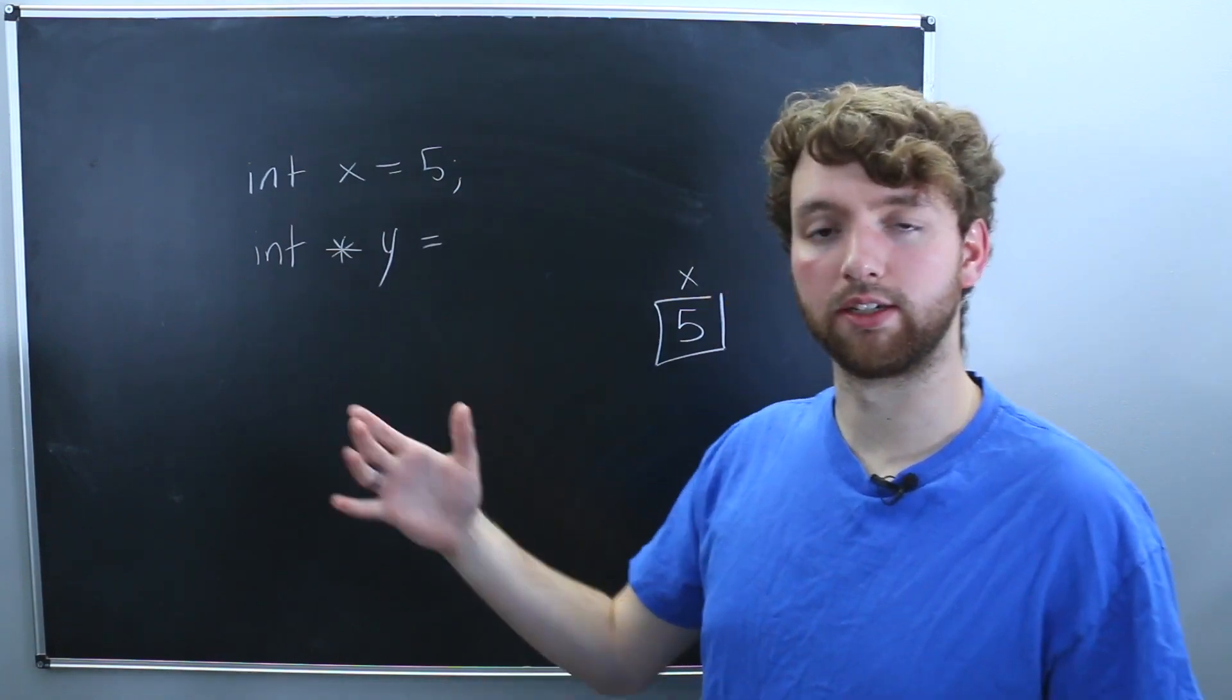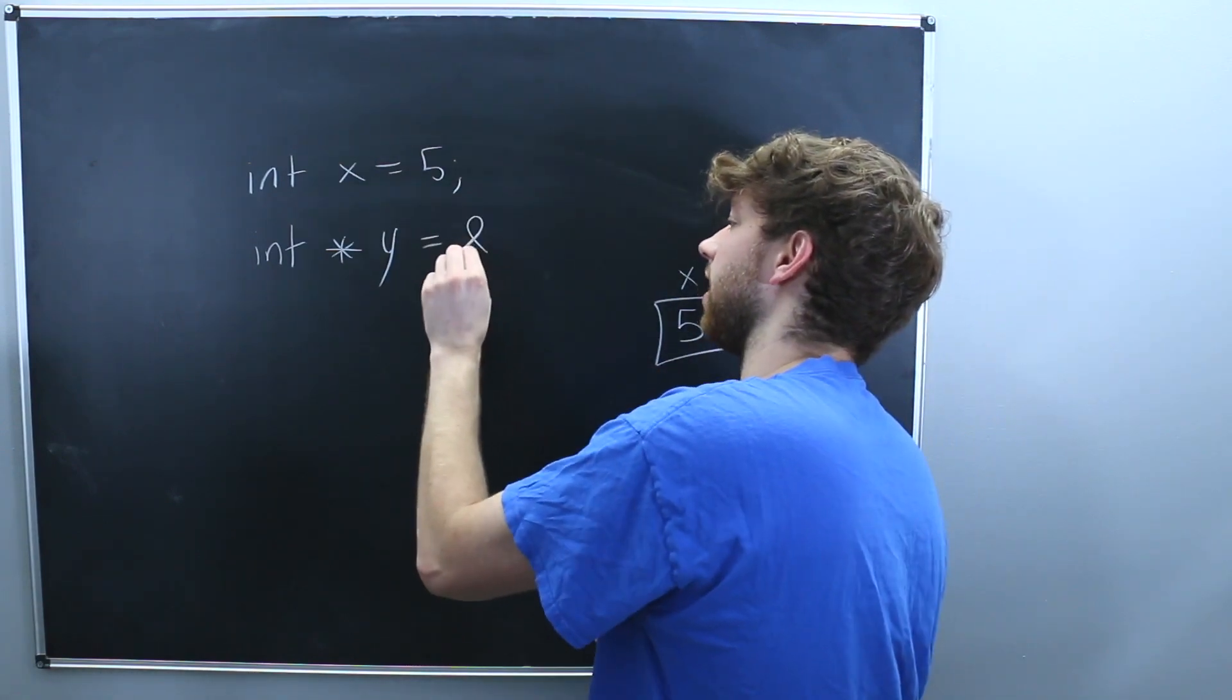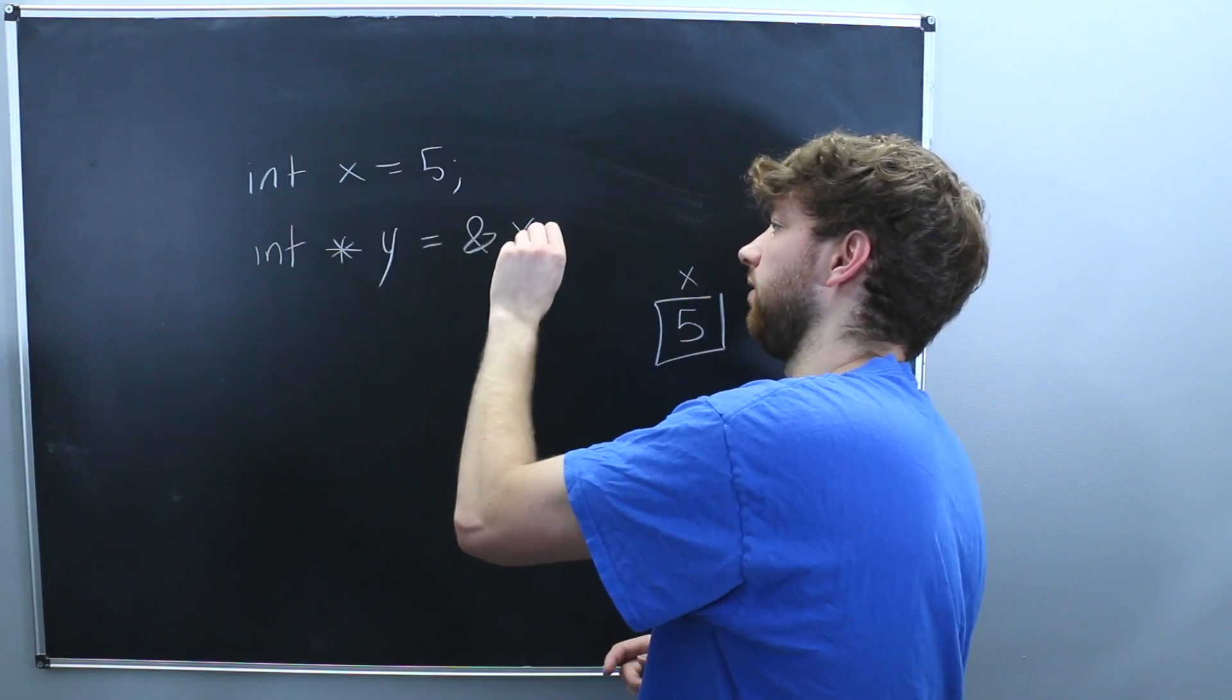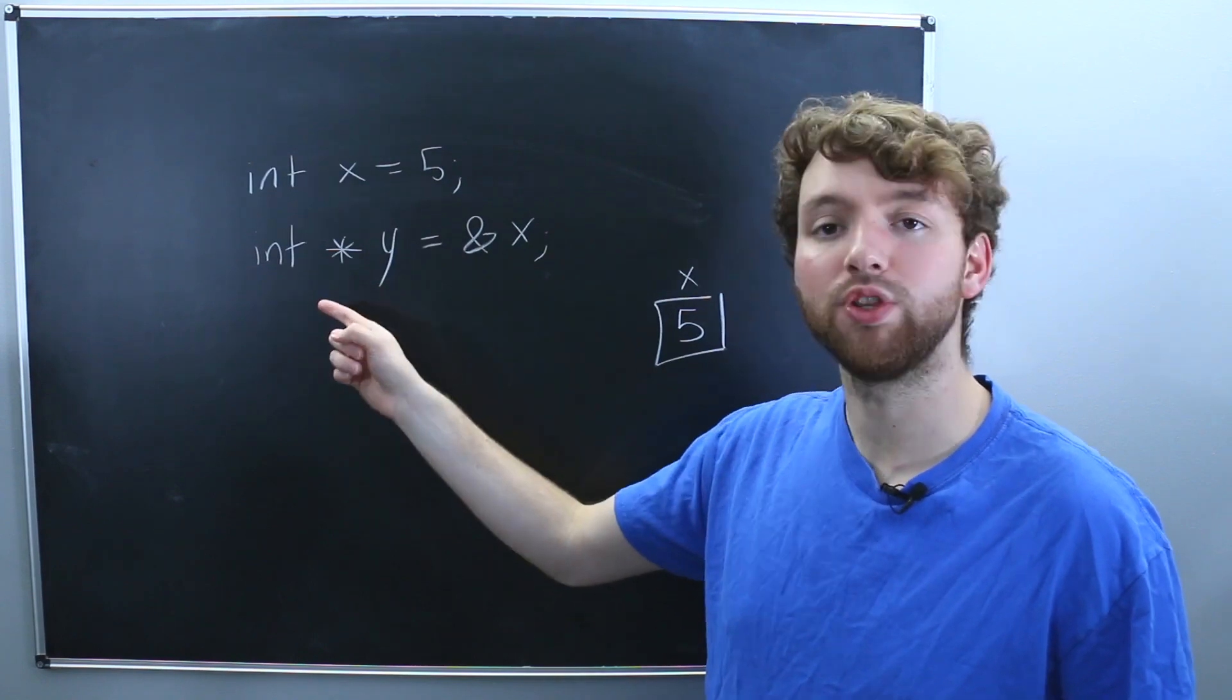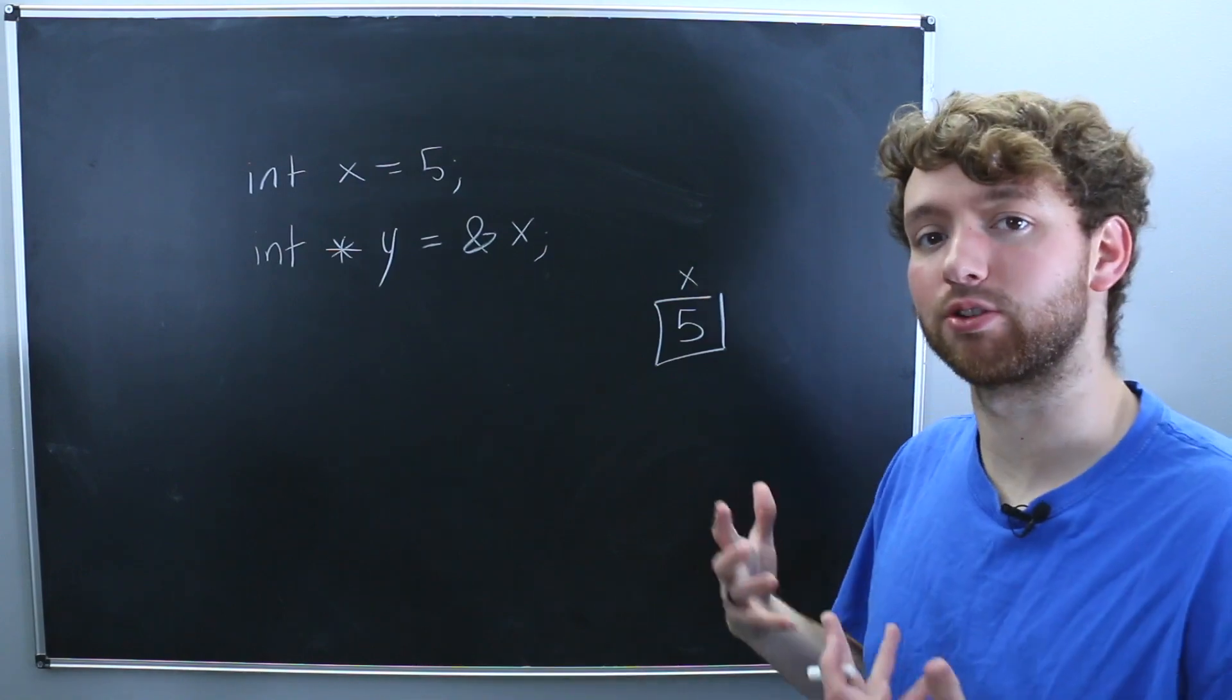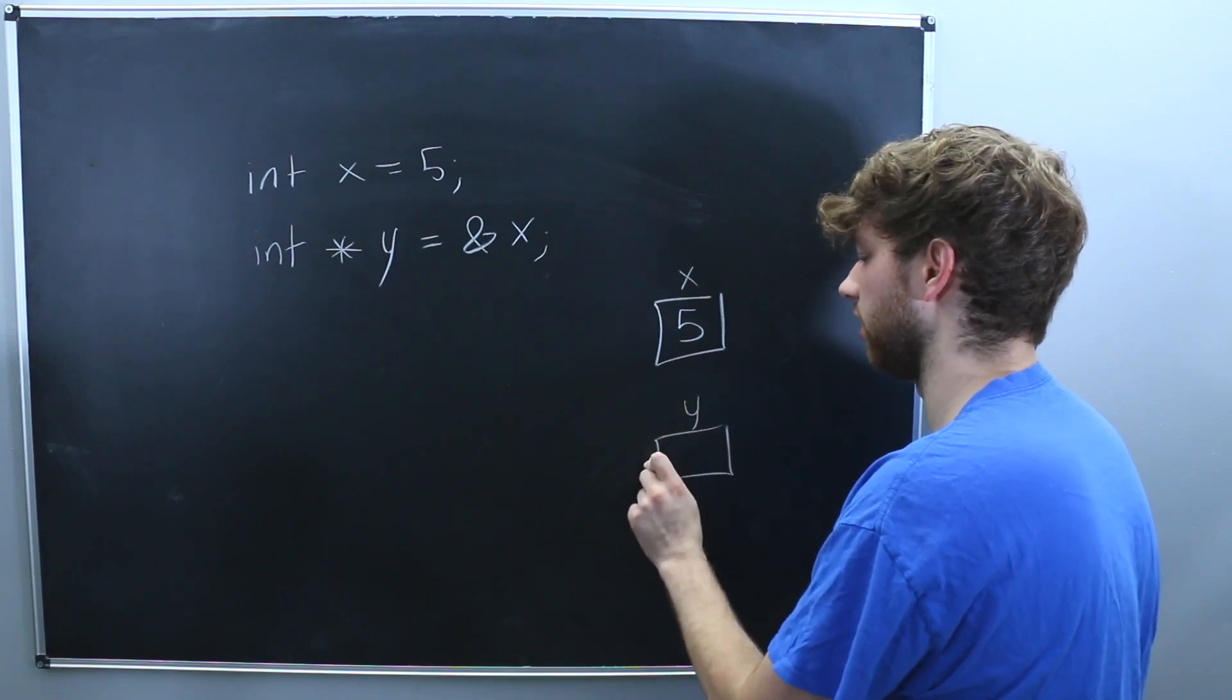And what this is going to contain is a memory address. So let's say you want this memory address, then you would use the address of operator, and then the variable x. So that is going to assign the memory address of x to this pointer variable. So once we got that, how do we actually use it?